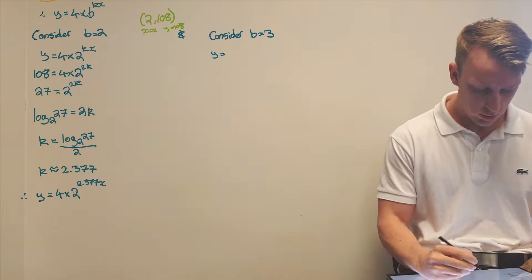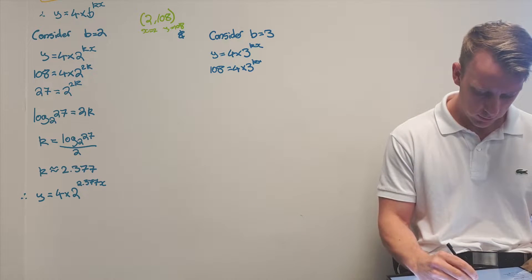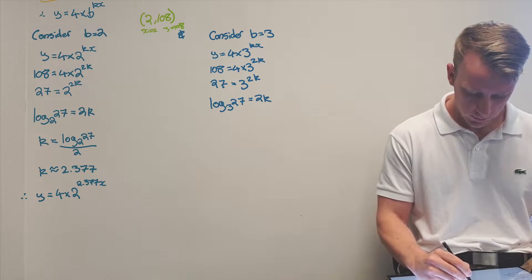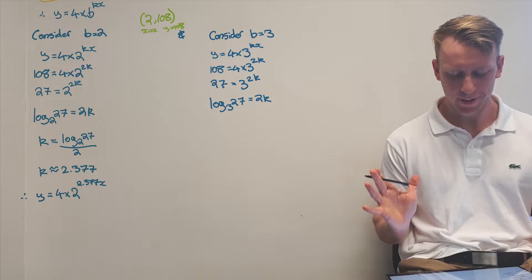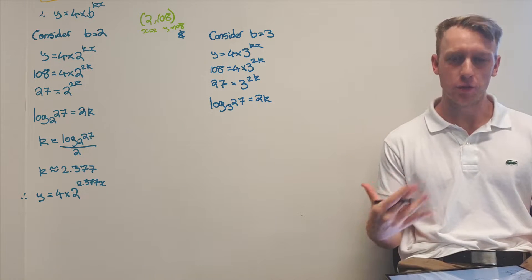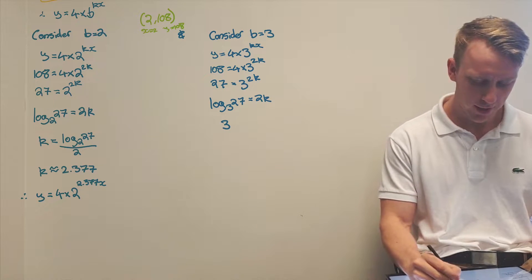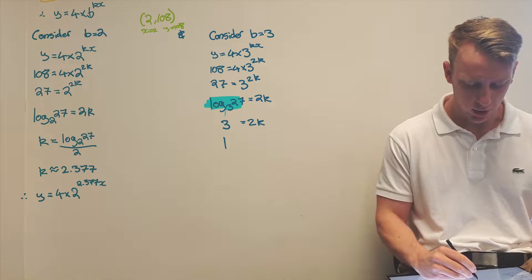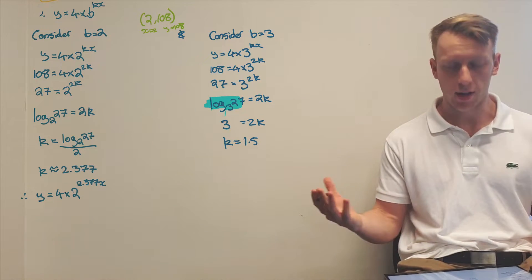Now considering b equal to 3: we note that log base 3 of 27 is just equal to 3, which gives us a nice value for k. We get k equal to 1.5 — one and a half.